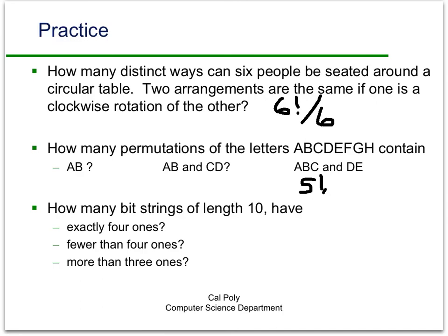How many bit strings of length 10? Exactly 4 ones. Well, that's just going to be C(10, 4). That's the positions of the 4 ones that we're picking out from the 10 possible positions. Fewer than 4 ones, that's just going to be the number of ways you can get 0 ones, 1 one, 2 ones, and 3 ones. So that's just going to be, apply the sum rule to the different combinations. C(10, 0), plus, up through, C(10, 3).